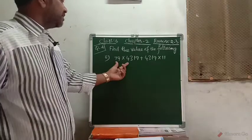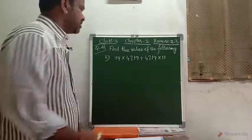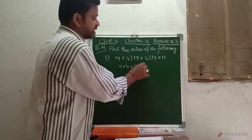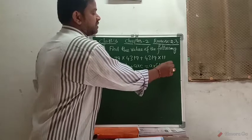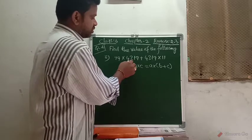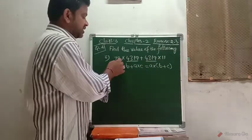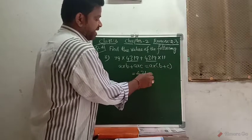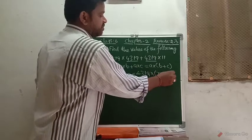After completing the first question, we consider the second question: 79 into 4319 plus 4319 into 11. This is also in the form of A into B plus A into C, so it can be written as A into B plus C. Here, 4319 appears two times so it is A, and 79 is B and 11 is C.